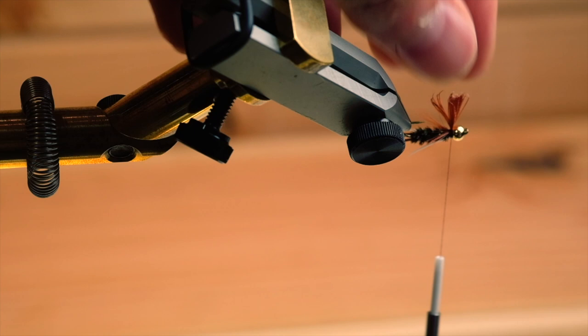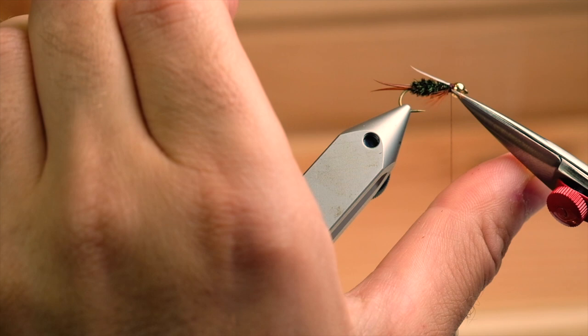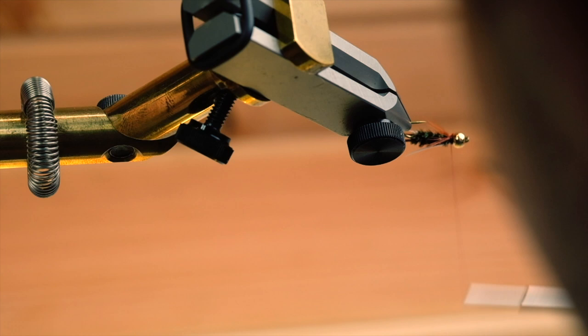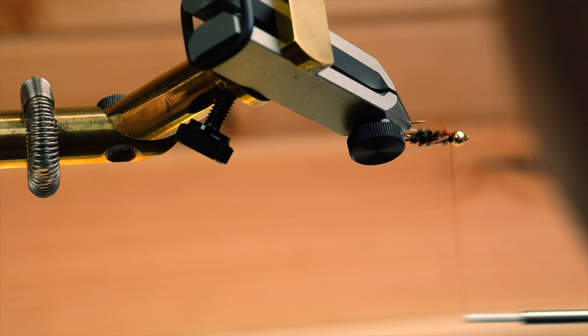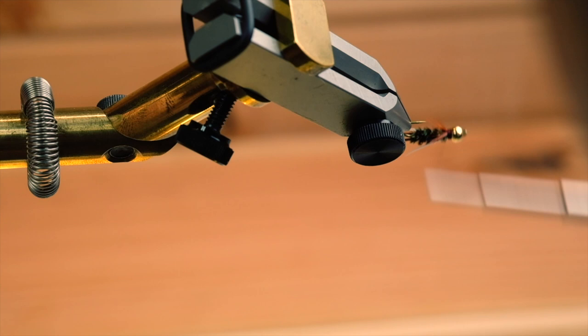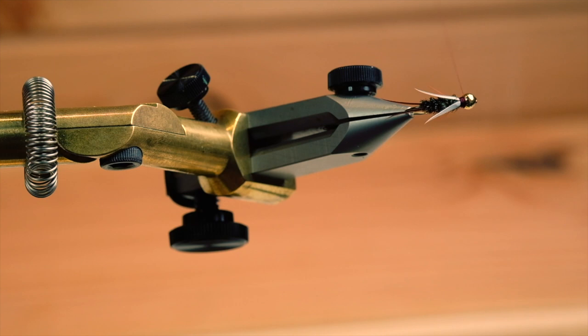Now with tying thread I'll create a collar and clean up. Turn my vise to check from all angles, it looks the way I want it to look. There we go, nice little collar. Take your whip finisher and finish your fly.